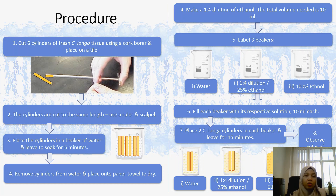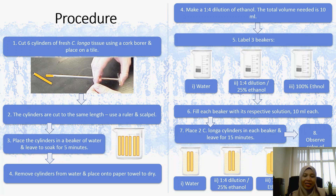Then, make a 1 to 2 dilution of ethanol with a total volume of 10 ml. Take 3 beakers and label them: the first as water, the second as 1 to 2 dilution or 25% ethanol, and the third as 100% ethanol.